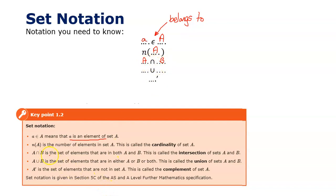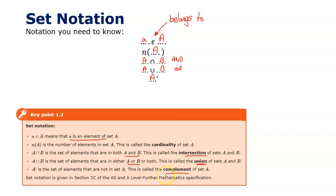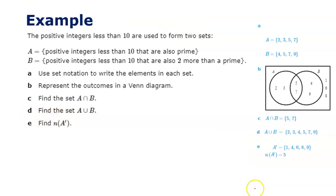The intersection of sets A and B — written with the ∩ symbol (like an n-shape) — means A AND B. The union — written with the ∪ symbol (the u-shape) — means A OR B, covering elements in either A or B or both. The complement, written A' (A-dash), means NOT in A — the elements not in set A.